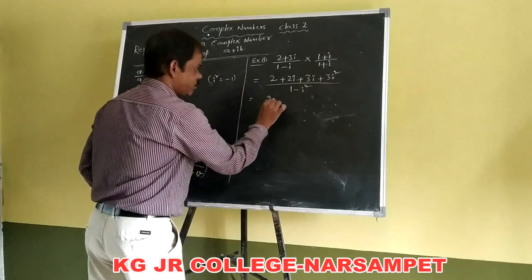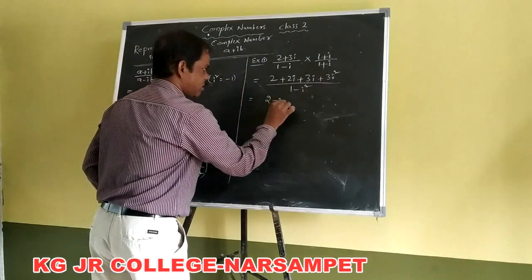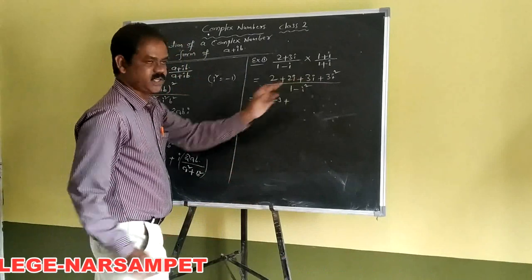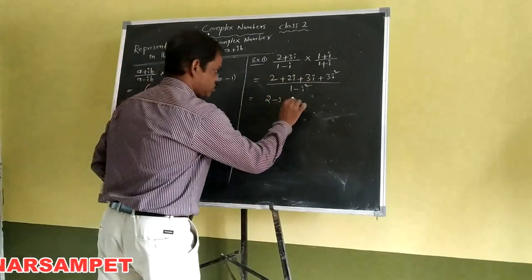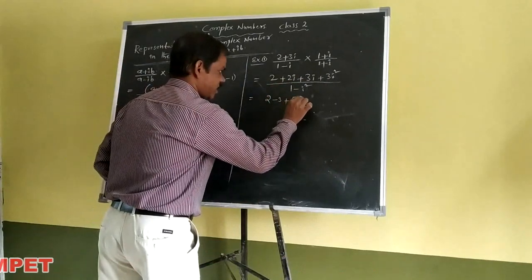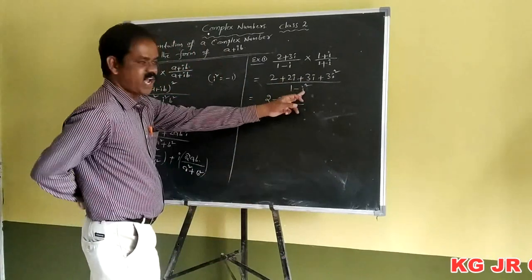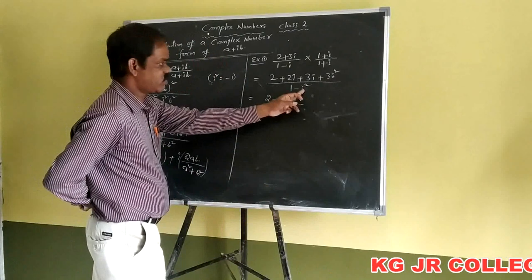So 15i squared becomes minus 15. The numerator simplifies: 2 minus 15 for the real terms, and 10i plus 3i equals 13i for the imaginary terms, all divided by the denominator. The i squared value equals minus 1.